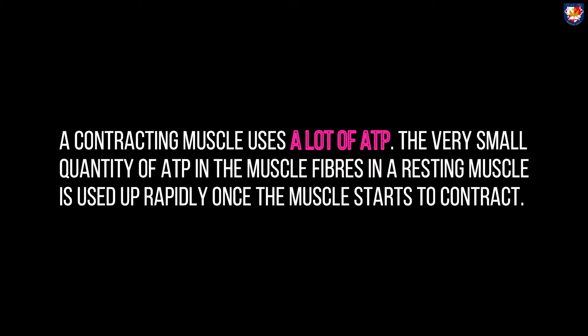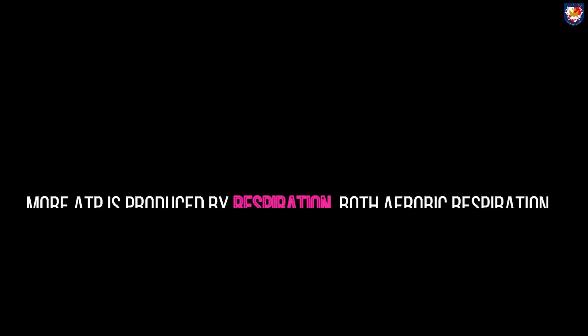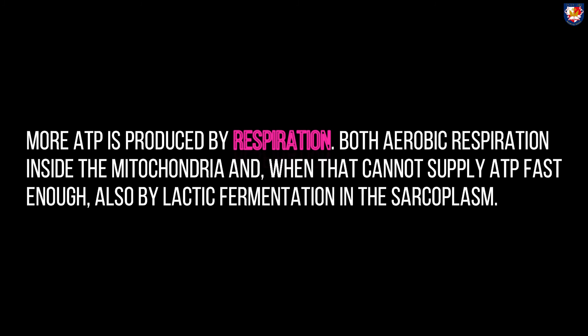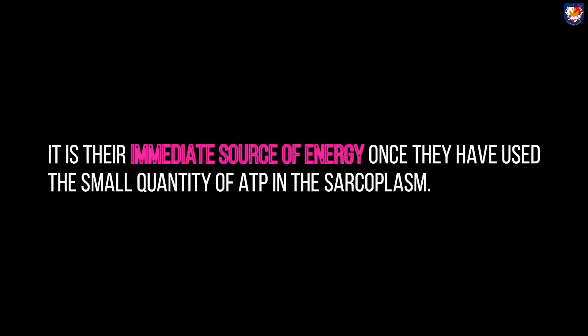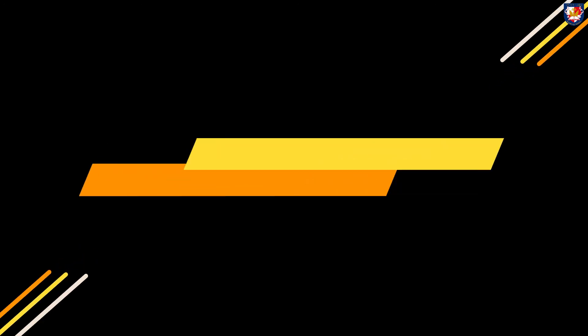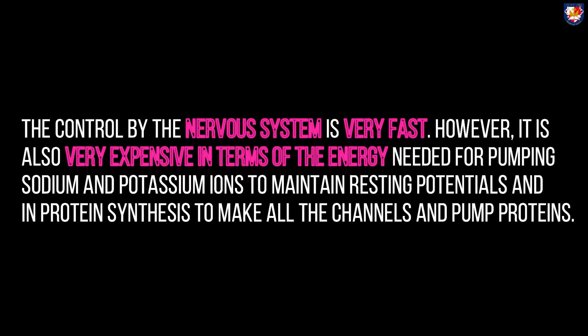Providing ATP for muscle contractions: a contracting muscle uses a lot of ATP. The very small quantity of ATP in resting muscle fibers is used up rapidly once the muscle starts to contract. More ATP is produced by respiration — both aerobic respiration inside the mitochondria, and when that cannot supply ATP fast enough, also by lactate fermentation in the sarcoplasm. Muscles also have another source of ATP produced from a substance called creatine phosphate; they keep stores of this substance in their sarcoplasm as their immediate source of energy.